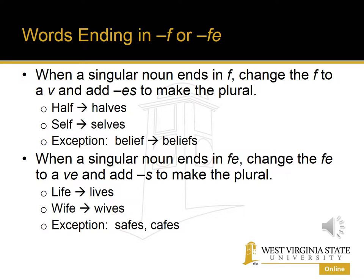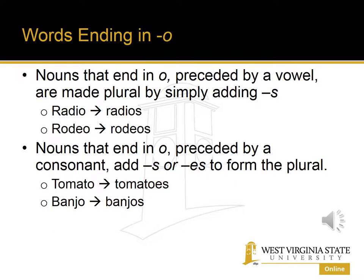This is probably one of the biggest problem areas for foreigners trying to learn the English language. Another spelling rule pertains to words that end in O. Nouns that end in O preceded by a vowel are made plural simply by adding S. For example, radio ends in O, preceded by the vowel I, so we just add an S to form the plural.